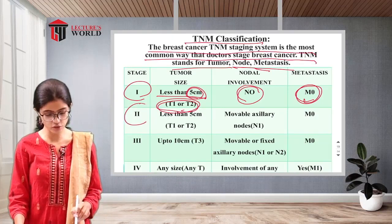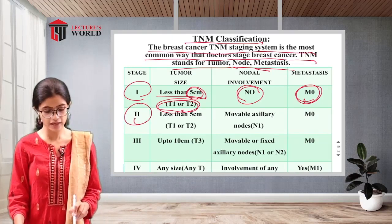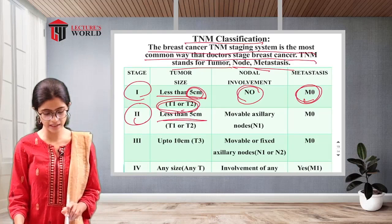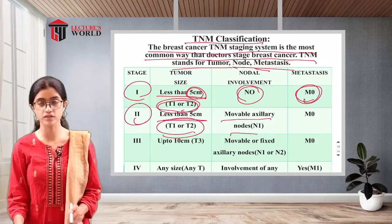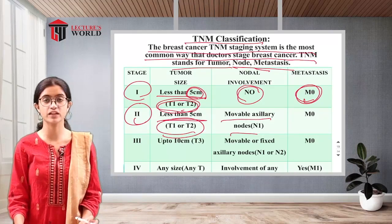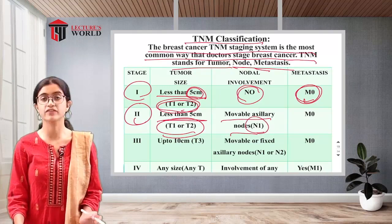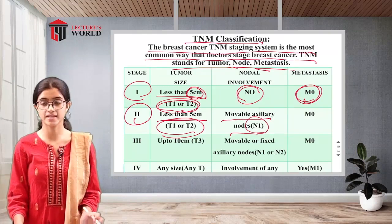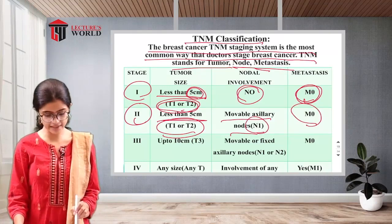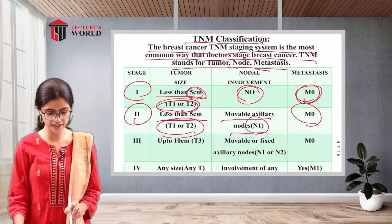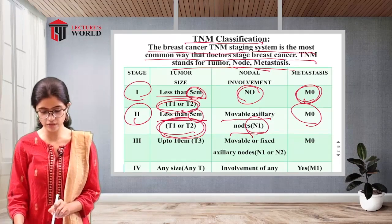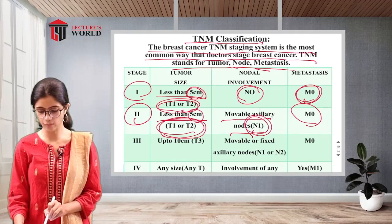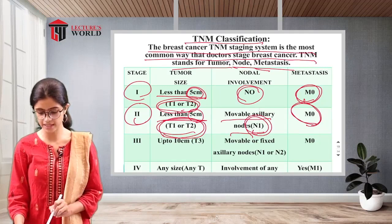In stage 2, the tumor is less than 5 cm (T1 or T2) with movable axillary lymph node involvement (N1) and no metastasis (M0). In stage 3, the tumor is up to 10 cm (T3); the lymph nodes may be movable or fixed (N1 or N2), and there is no metastasis (M0).